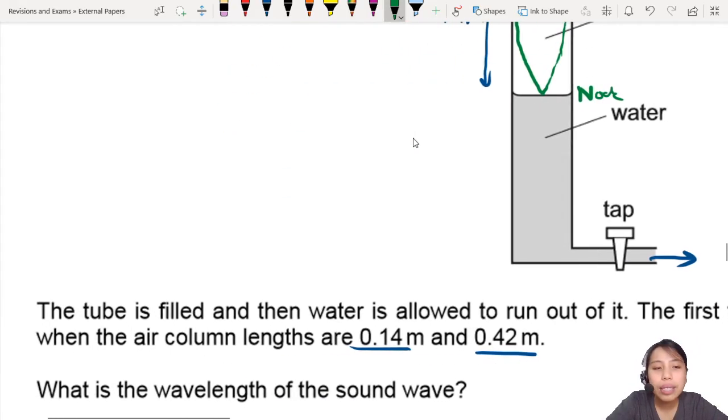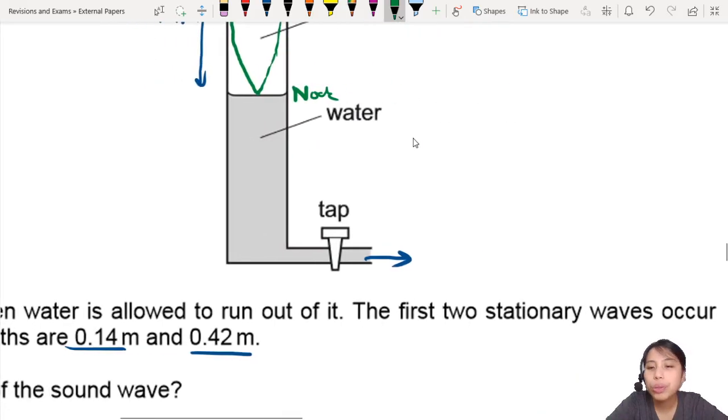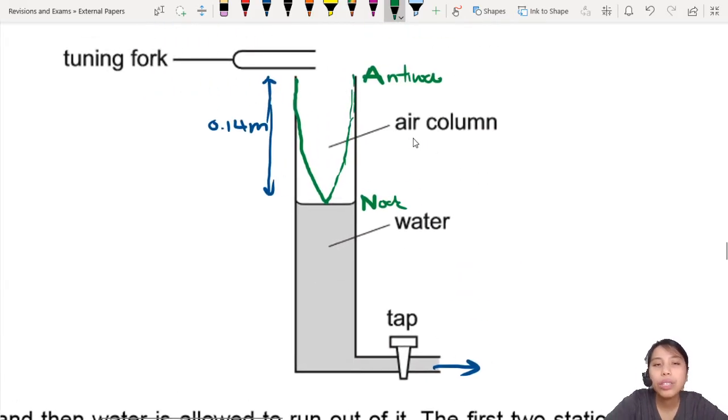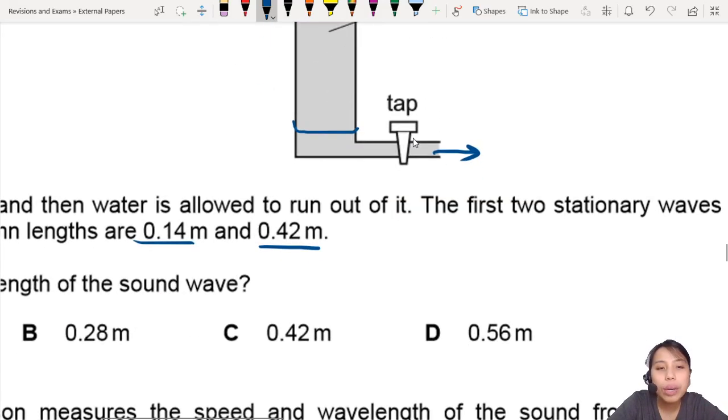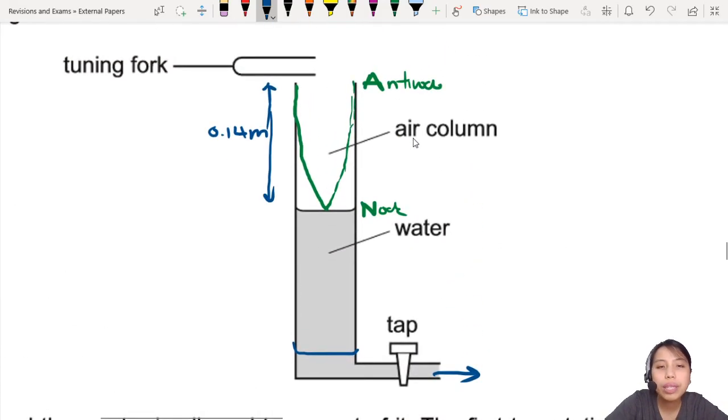Then maybe the water drops down. First two stationary waves. So another stationary wave occurs when the water level has dropped really low, maybe somewhere here. And the whole water column is 0.42 meters. So this whole thing is 0.42 meters.